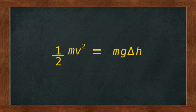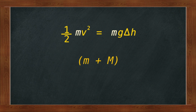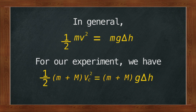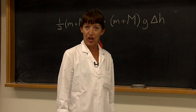For our particular circumstances, we are referring to the kinetic and potential energy of the pendulum with the projectile after collision. The mass in consideration is the combined mass (m + M), and the velocity is v_c. Our equation becomes: ½(M + m)v_c² = (M + m)gΔh. We can measure the masses, we know the value for g, and delta h is the height that the pendulum rises.